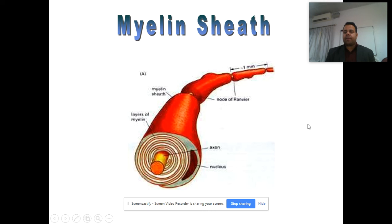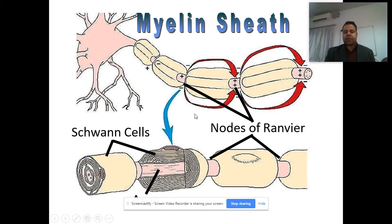Some nerve fibers are myelinated while others are non-myelinated. The myelin sheath protects the axon from damage and helps in the saltatory conduction of signal transduction — the signal through myelinated fibers is much faster compared to non-myelinated fibers. The myelin sheath is made up of sheath cells around the axons, and between them are the nodes of Ranvier. When a signal passes, it jumps from one node of Ranvier to another, making conduction very fast. This type of conduction is called saltatory conduction.